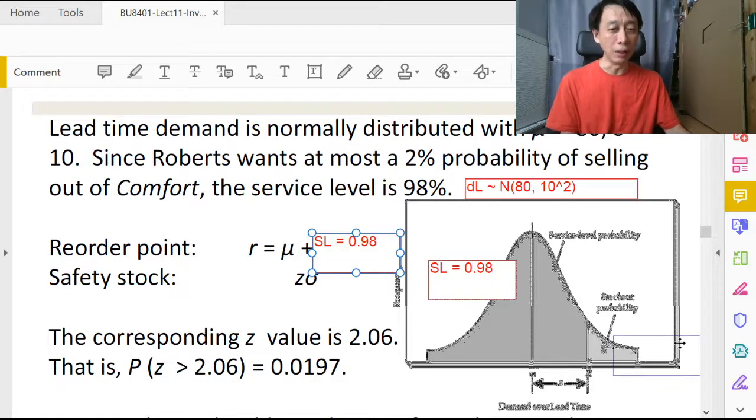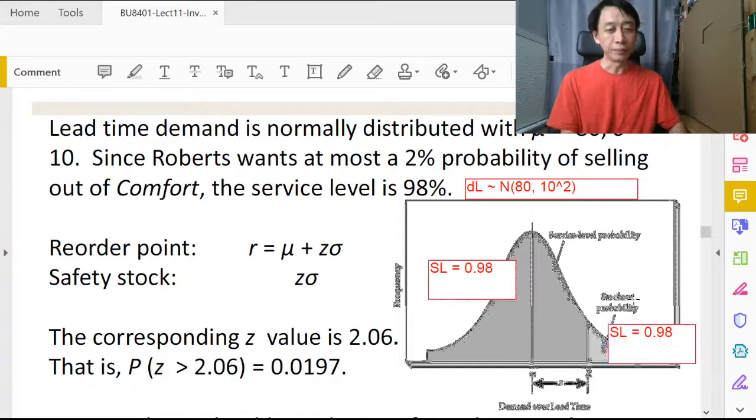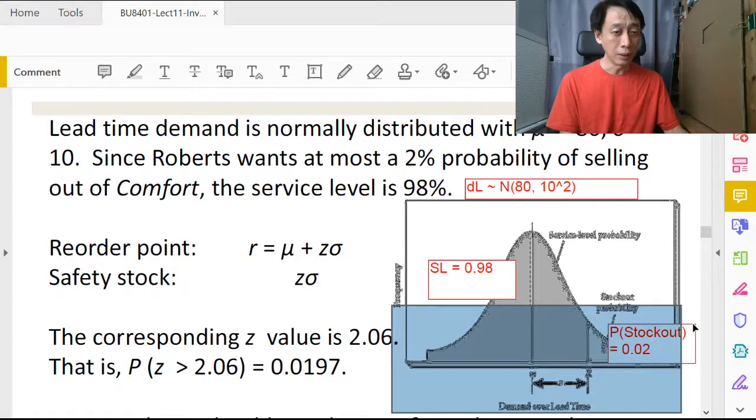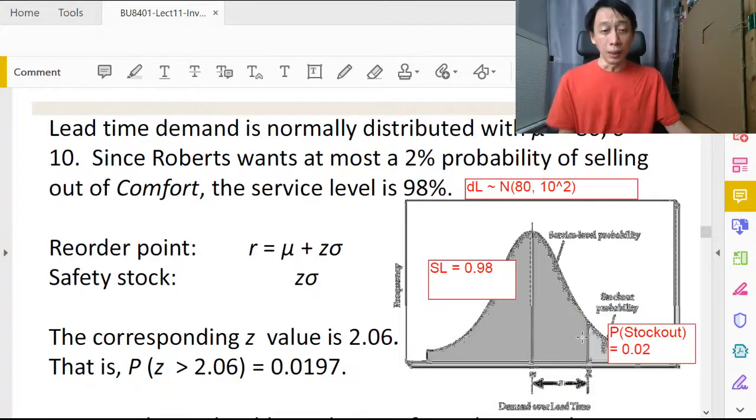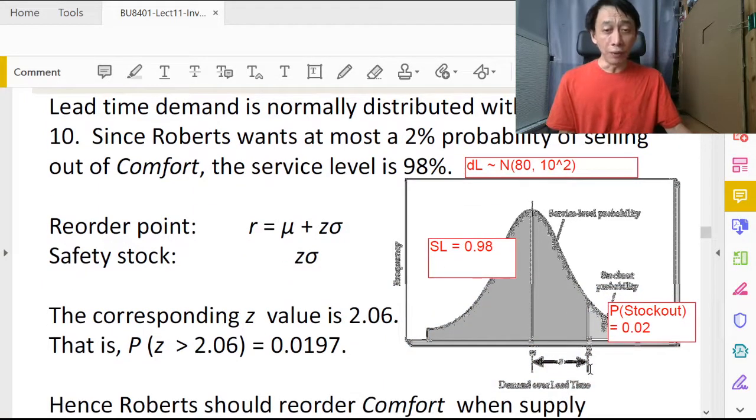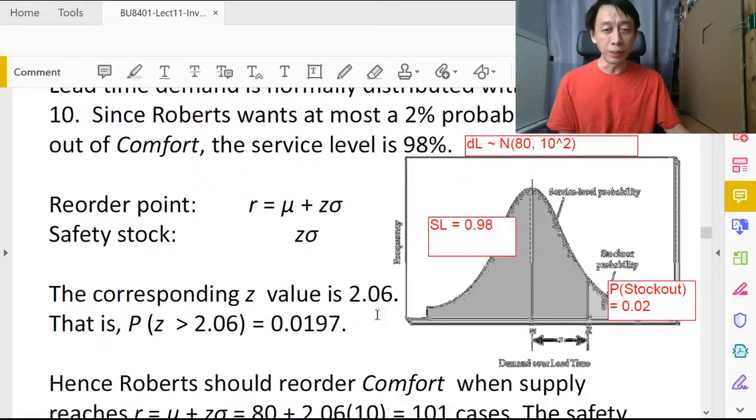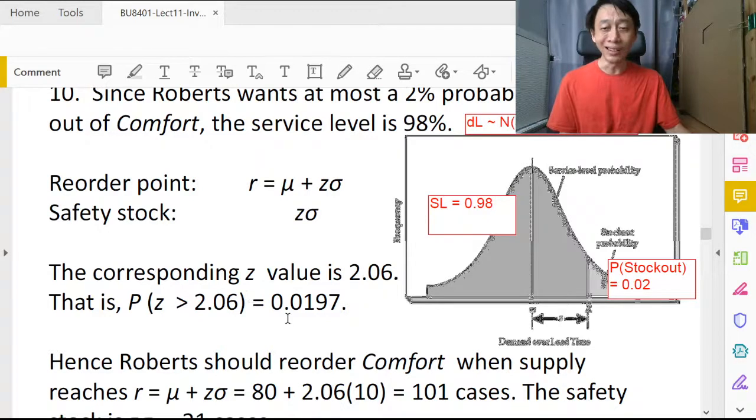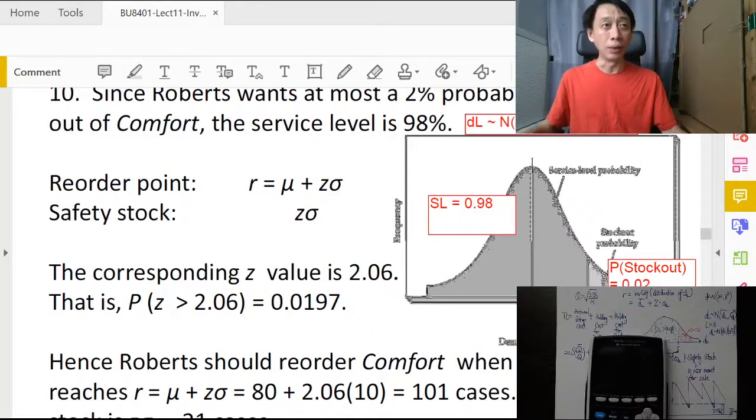So our probability of stockout is 0.02. Now what we need to do therefore is to find the reorder point, and the reorder point in this illustrated working, the calculation is done by using Z value. So the Z value for 0.98 is basically 2.06.